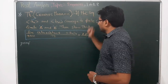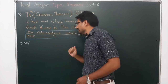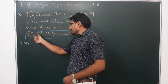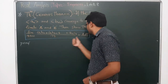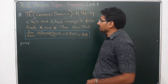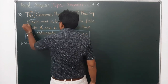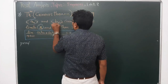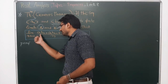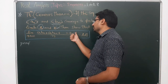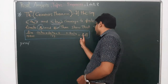The theorem says that if the sequences a_n and b_n converge to finite limits a and b, then we have to show that the limit of (a_1·b_n + a_2·b_{n-1} + ... + a_n·b_1) over n converges to a·b, the product of the two limit points.